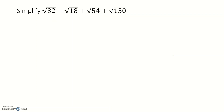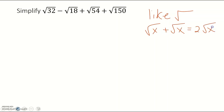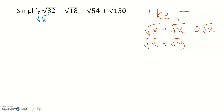Simplify: the square root of 32 minus the square root of 18 plus the square root of 54 plus the square root of 150. When we add or subtract square roots, we treat them like like terms — you have to have like radicals. None of these are like right now, but we can simplify each. The square root of 32 is the square root of 16 times 2, which gives 4√2. The square root of 18 is √9 times 2, which gives 3√2.